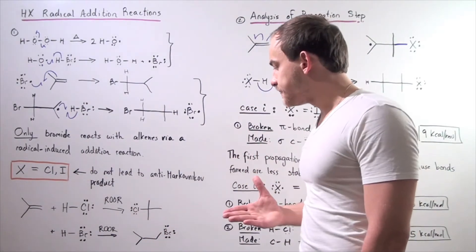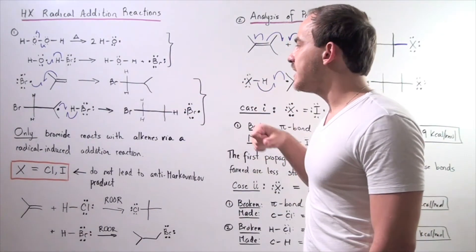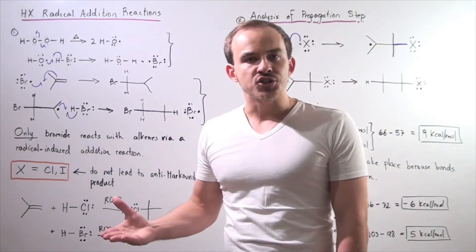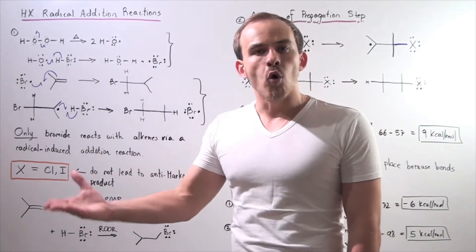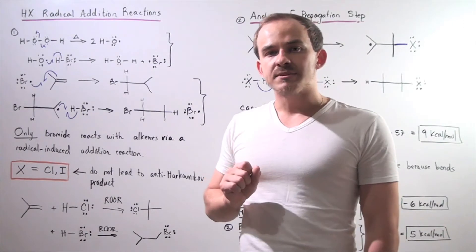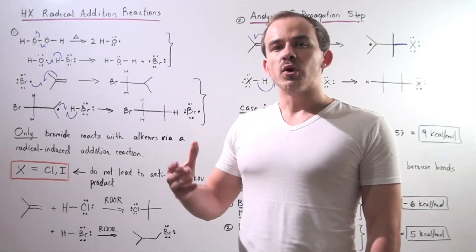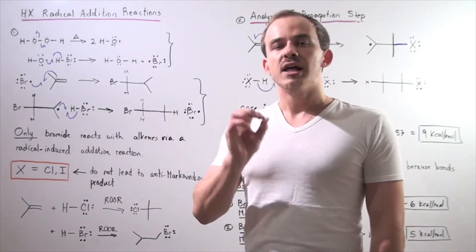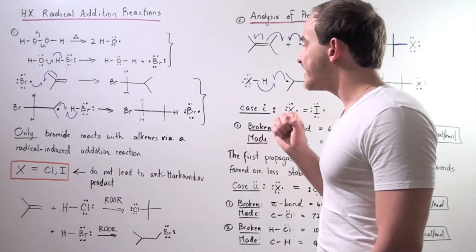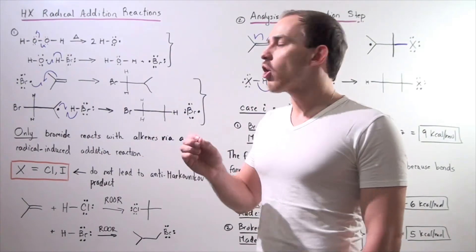Why is this the case? To answer this question, we have to examine the two propagation steps. Recall that endothermic reactions are those where the bonds formed are less stable than the bonds being broken, while exothermic reactions are those where the bonds formed are more stable than the bonds being broken.